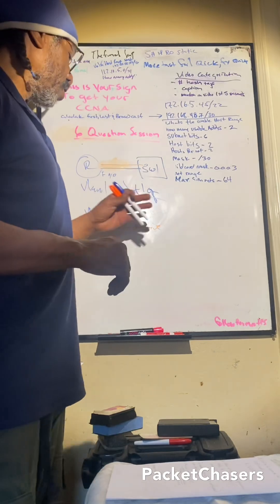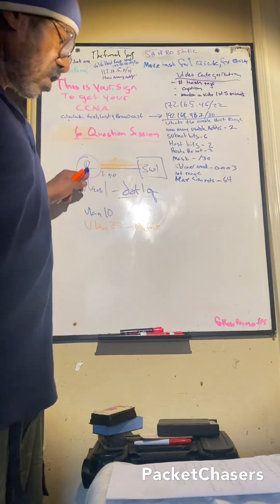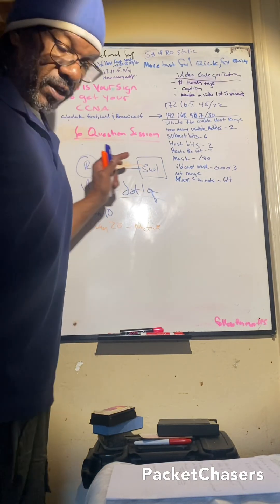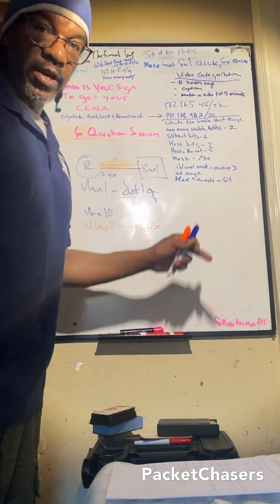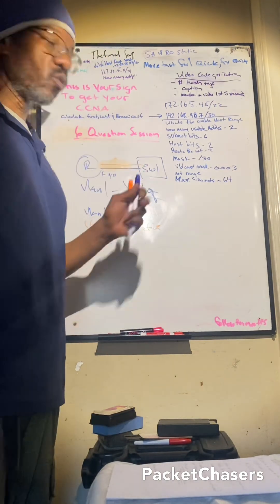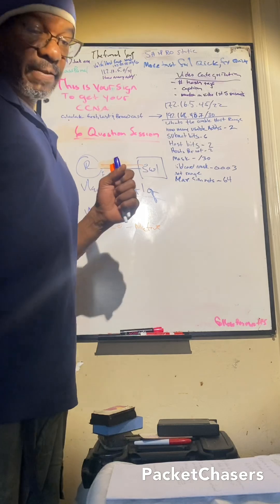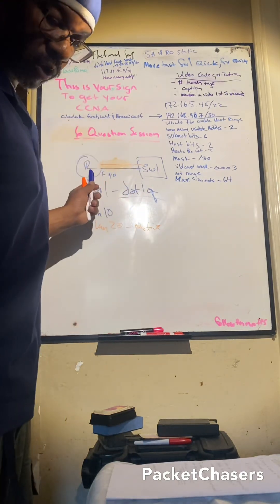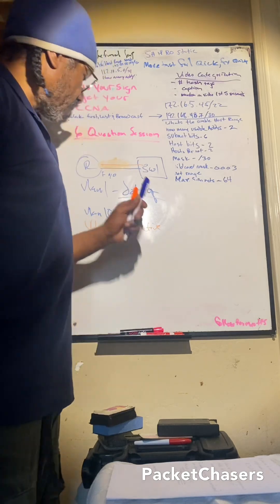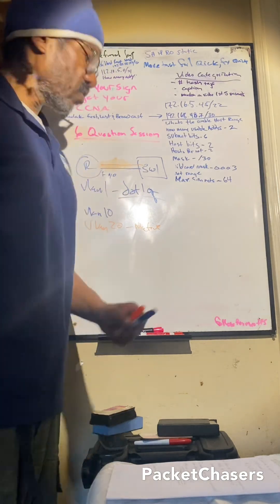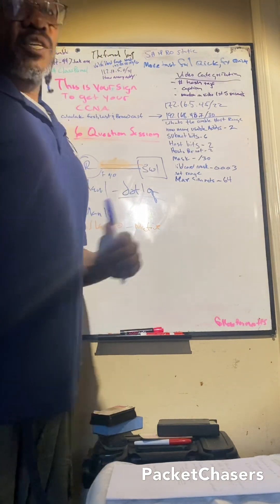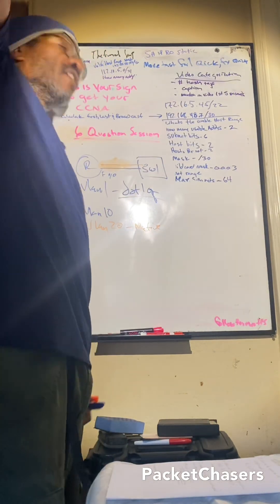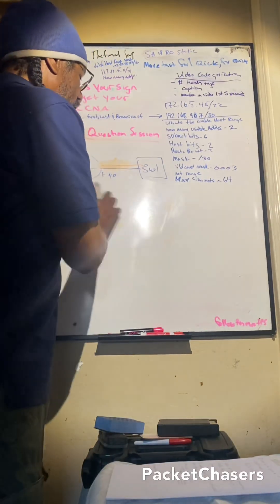So once again: which interface on a Cisco router processes traffic destined for the native VLAN if the router is connected to a switch? Either the main connection — f0/0 — or the interface that's configured with dot1q. Shout out to all my packet chasers — appreciate you for coming through today.